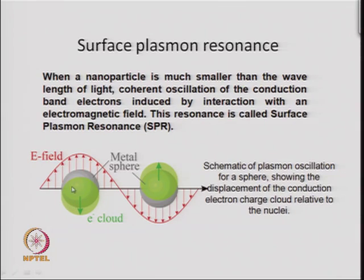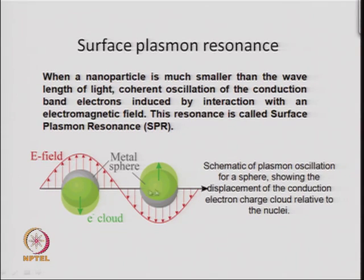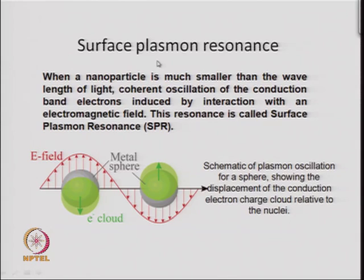The schematics show this metal particle with the electric field and the oscillating electron cloud. This electron cloud oscillates along with the electromagnetic radiation when the particle size is much smaller than the wavelength of the incoming light beam. If the particle were larger than the wavelength, surface plasmon resonance would not occur. When size is much smaller than wavelength, you see oscillations of the conduction band electrons — these are called plasmons.